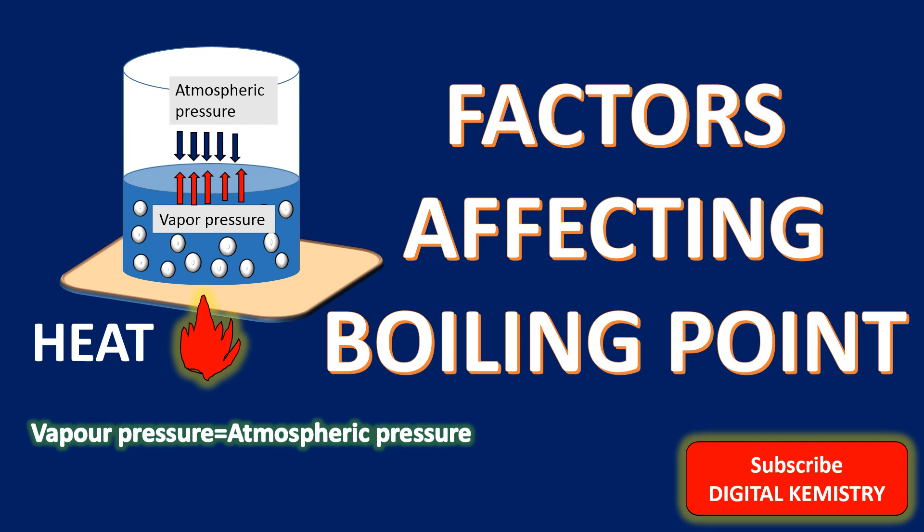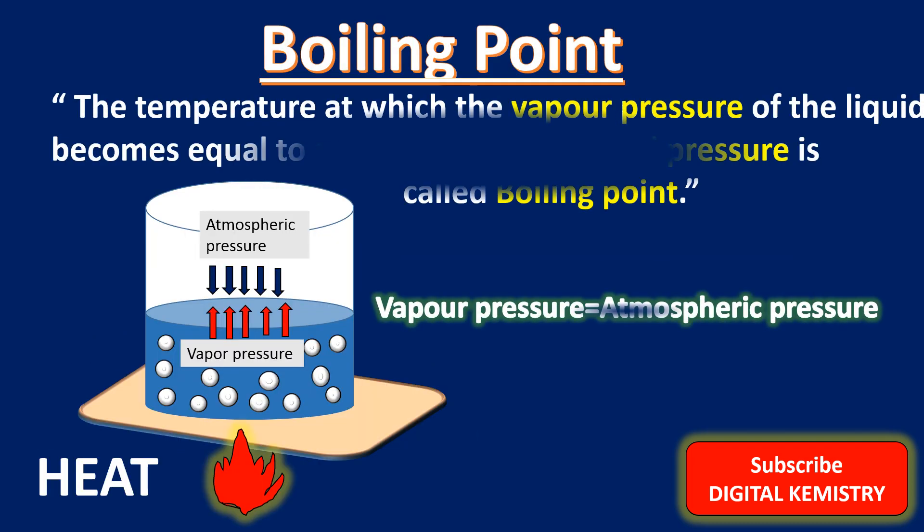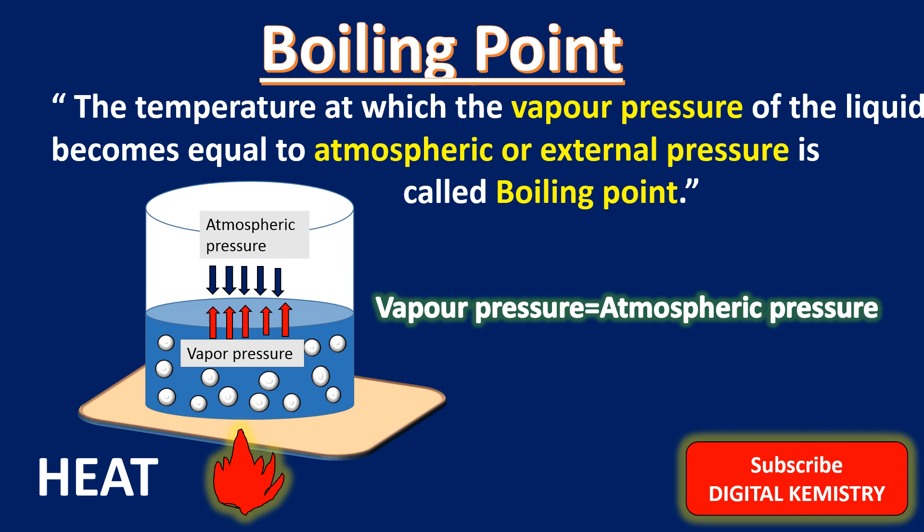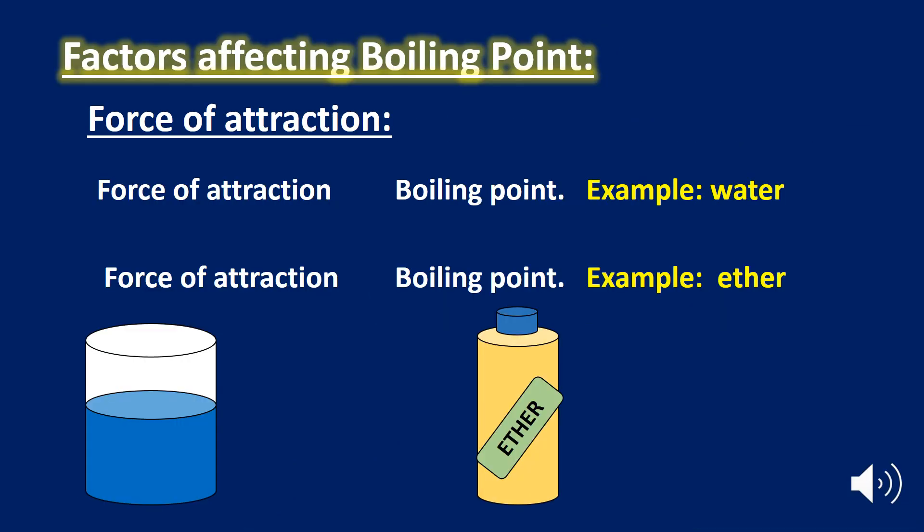So what is boiling point? The temperature at which the vapor pressure of the liquid becomes equal to the atmospheric or external pressure is called the boiling point. With the increase of temperature, the vapor pressure increases and ultimately reaches the atmospheric or external pressure — at this stage boiling starts.